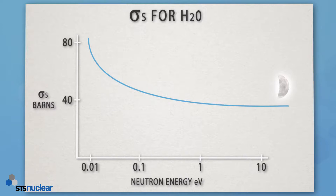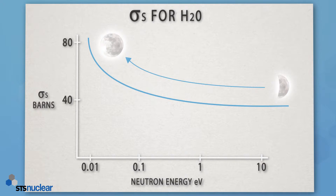But if our neutron slows down and we start to track up our curve, we're increasing the probability of that reaction occurring, because now our nucleus — the moon — is showing more of itself to that neutron. And that's why our probability is increasing of that reaction occurring. So you can see, from a high-energy to a low-energy neutron, the effect that has on the cross-section for light water. And in light water, it's that hydrogen nucleus which is our target nucleus.